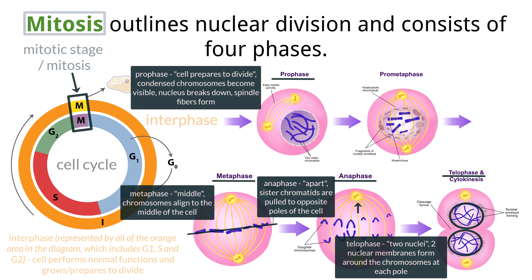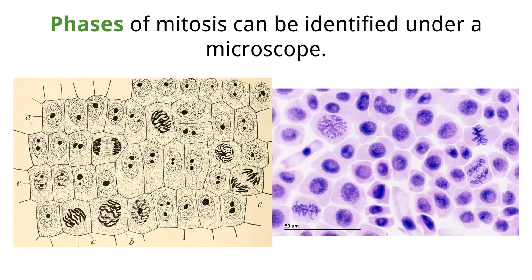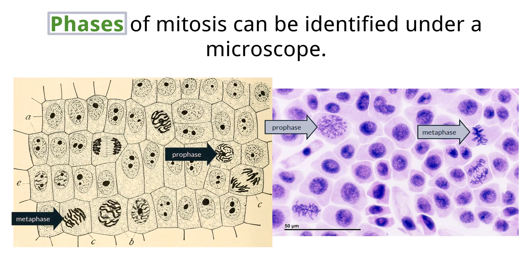Looking at this micrograph of mitosis, you are able to see all phases of mitosis. Prophase shows the condensed chromosomes. Metaphase shows where the chromosomes are lined up on the metaphase plate. You can see the chromosomes pulling apart during anaphase, and in telophase, there is a cell forming a cell plate, showing the two nuclei and the cell beginning to undergo cytokinesis.